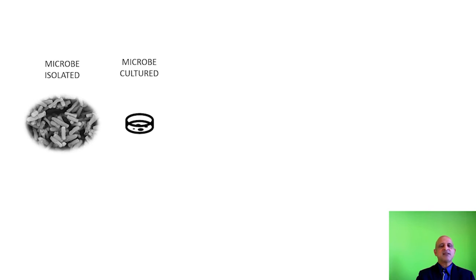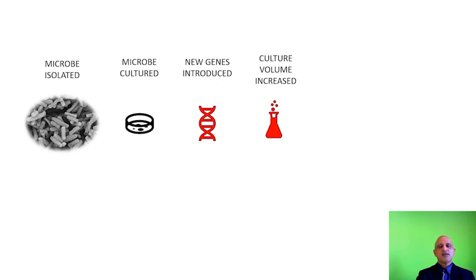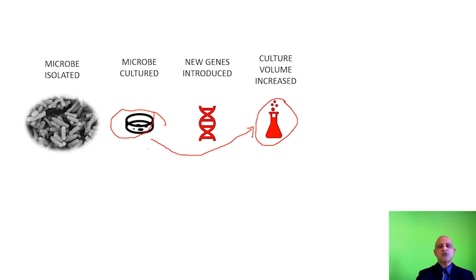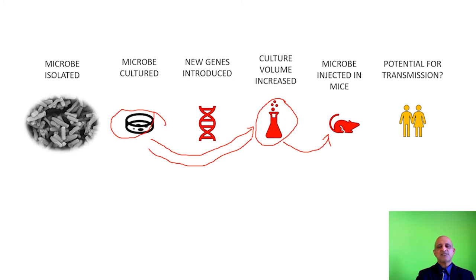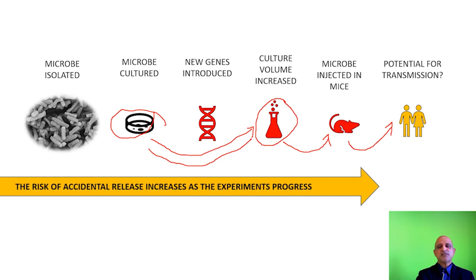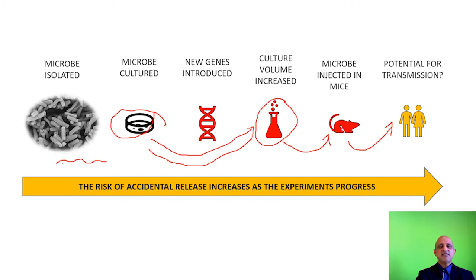Let us develop this analogy with an example. Assume that we isolated a microbe from the soil but we do not know its identity. We culture the microbe in the lab, then introduce new genes into this microbe, and increase the culture volume in the fermenter — from a small petri plate of about 20 cc of media to a 25-litre fermenter with liquid culture. Then we inject this microbe into mice to check whether it is pathogenic or non-pathogenic. There is now a potential for transmission from the mice to the laboratory workers. A simple process of increasing the culture volume and then infecting another host has increased the risk of accidental release of this particular biological agent.